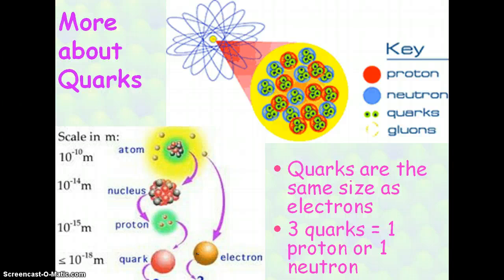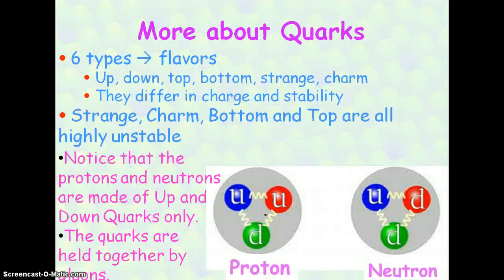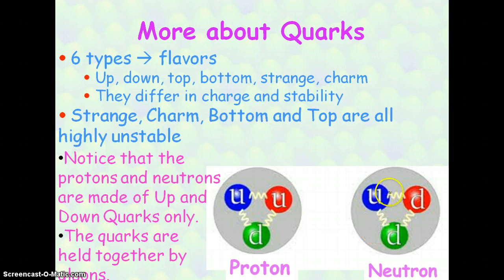Remember that quarks are the same size as electrons, and when you have three quarks put together, it's going to give you a proton or neutron, depending on which quarks combine. There are six flavors or types of quarks: up, down, top, bottom, strange, and charm. They all differ in charge and stability. Strange, charm, bottom, and top are all highly unstable, so we don't see them in very common particles. In the diagrams of the proton and neutron shown here, gluons are holding the quarks together, and you only see up and down quarks.